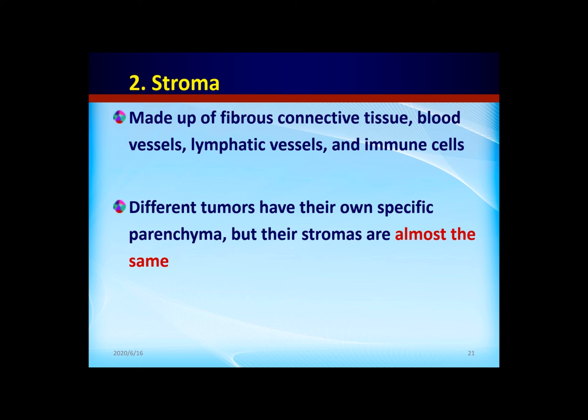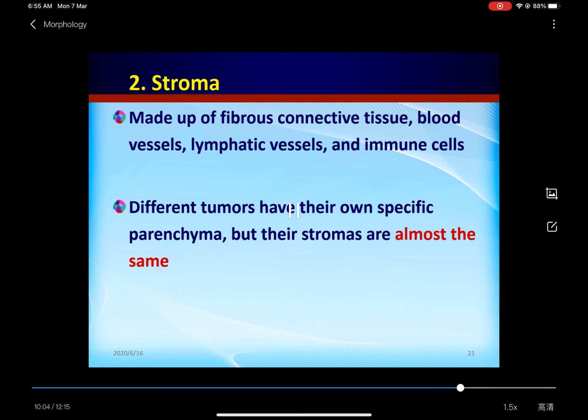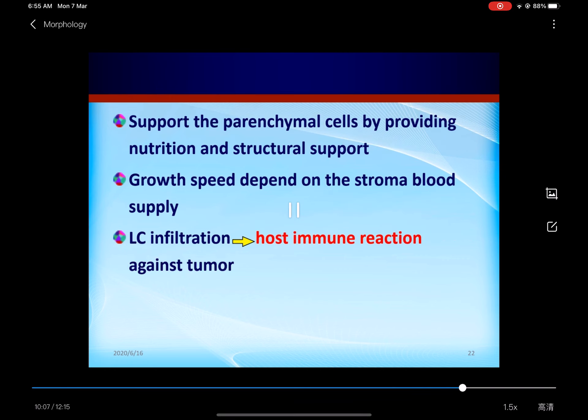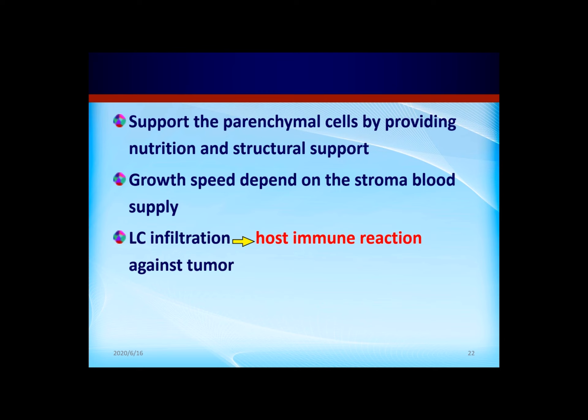Different tumors contain different parenchyma, but their stroma are all the same. The significance of stroma includes: supporting the parenchymal cells by providing nutrition and structural support; the growth speed depends on the stroma blood supply; and immune cells — for example, lymphocyte infiltration — represent a host immune reaction.